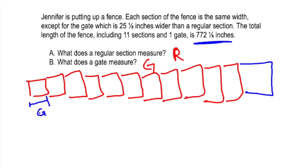That distance is G. No, it's not. That distance is R, regular section. That distance is G, gate section. So I can write this equation: 11R plus G equals 772⅛.